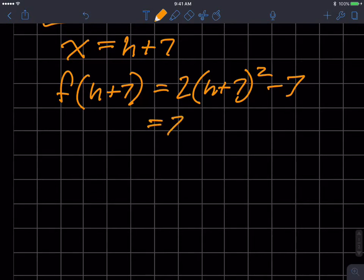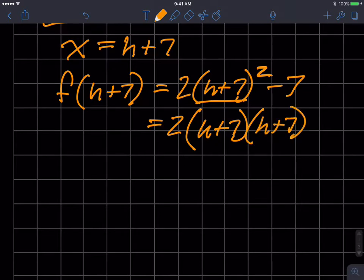And so this, using order of operations, is going to be 2 times, remember, an exponent means take the base and multiply it twice. And so I get that guy. Distribute all of this.